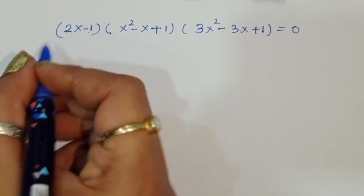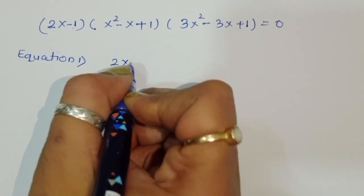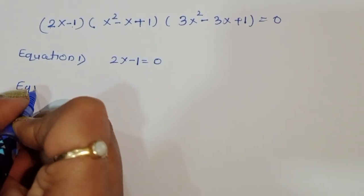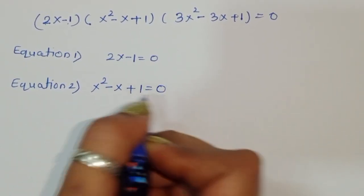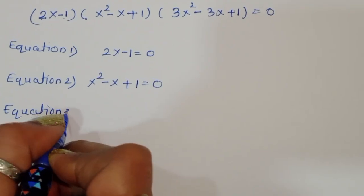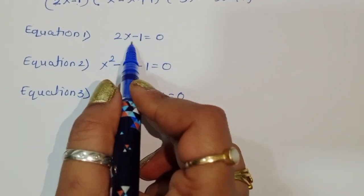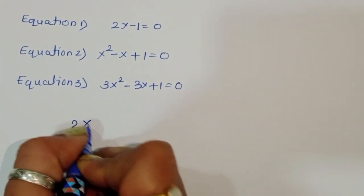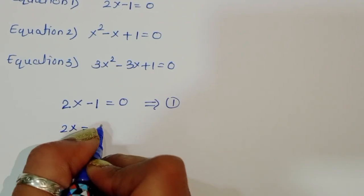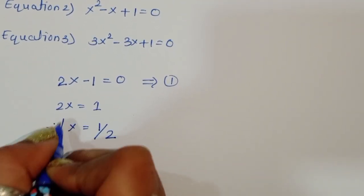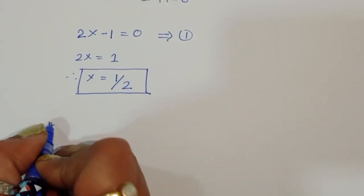From equation 1: 2x - 1 = 0, so 2x = 1, therefore x = 1/2. This is the first value of x.